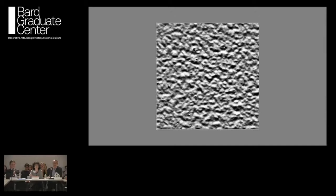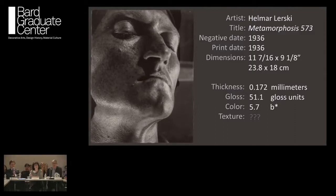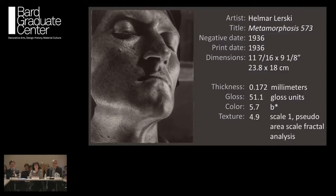One of the teams used pixel brightness as a proxy for height — the brighter the pixel, the higher it is — so from a flat image we now have a vertical scale and can think about this in three dimensions. Once we did that, we could replace the difficult texture metric with a pseudo-area fractal analysis, arriving at a scale of 4.9.